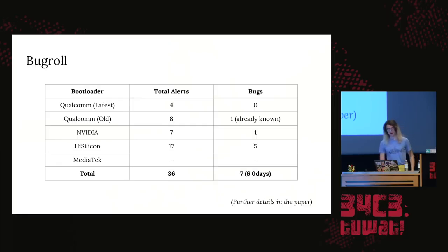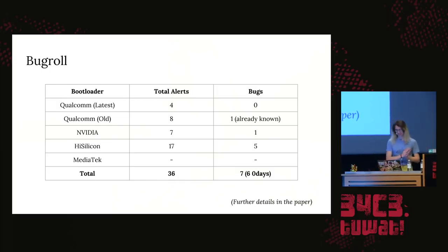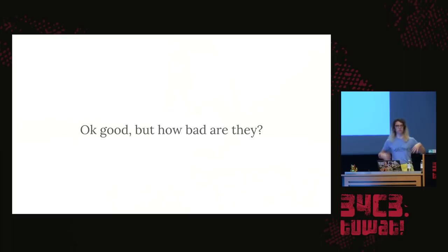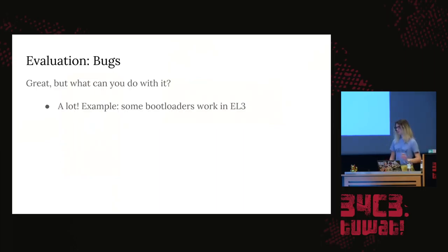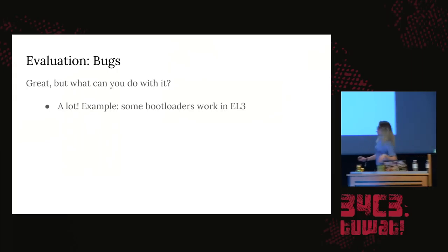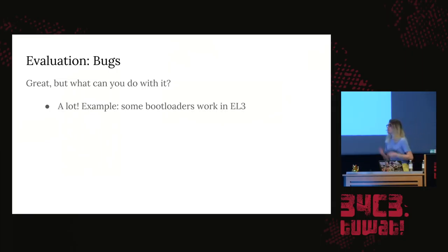What are the bugs we found? We evaluated this on four bootloaders and found several bugs, six of which were zero-days. You can crash at address 0x41414141 — that's pretty serious. Some of the bootloaders do work in ARM EL3, so this is pretty significant. You can do whatever you want on the device if you have sufficient control over it. This is rootkit territory — you could break anything you wanted.